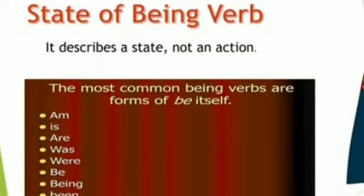Now students, state of being verbs. It describes a state, not an action. The most common being verbs are a form of 'be' itself. Some examples are: am, is, are, was, were, be, being, and been.